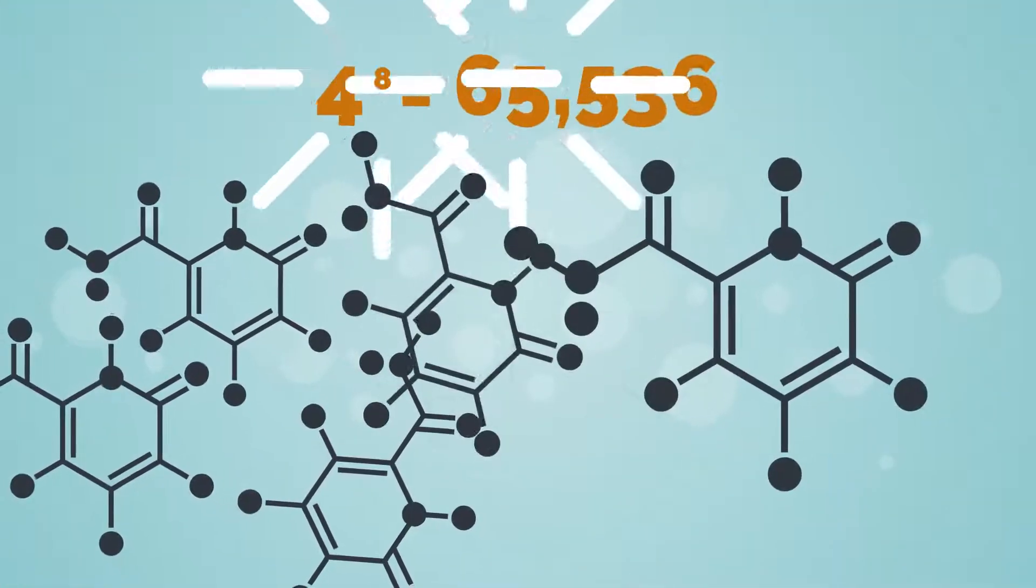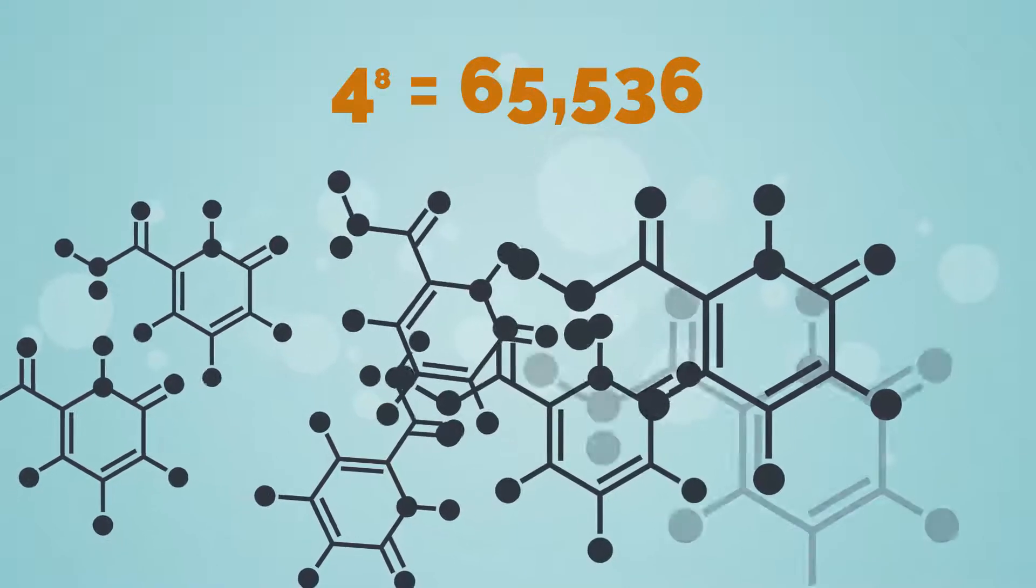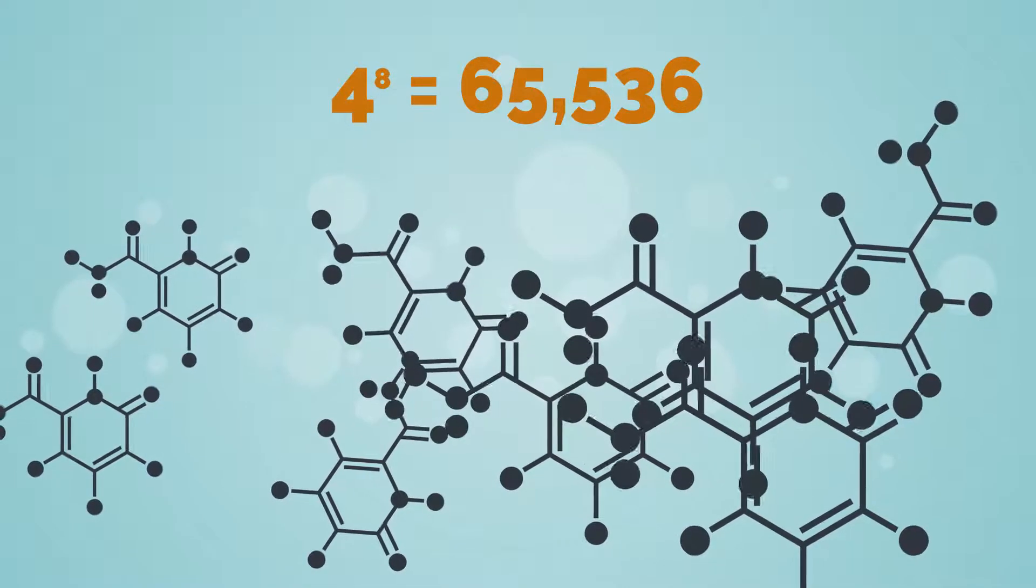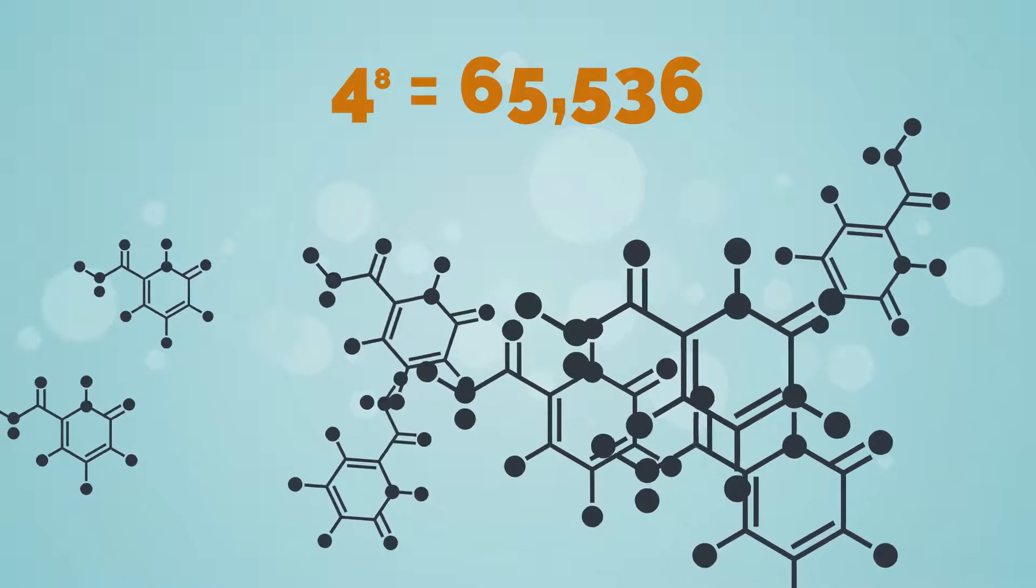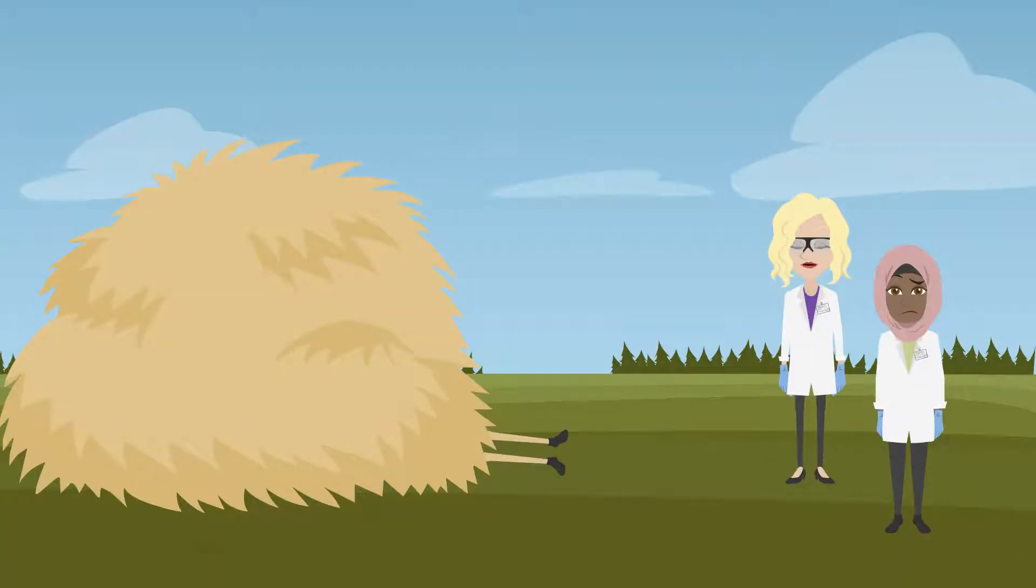The spinosan molecules have more than 65,000 potential combinations to explore for possible improvements. Hundreds of combinations were tested, but none was as good as Kalkova. It would take years to find that needle in the haystack if one were there at all.